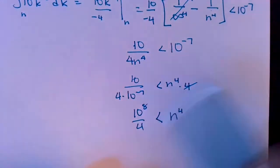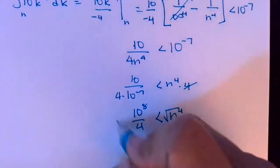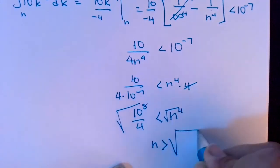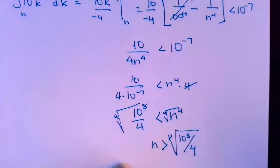Again, because everybody's positive, I can go ahead and do my 4th root for both sides. So I need the n to be greater than whatever the 4th root of 10 to the 8th over 4 is.